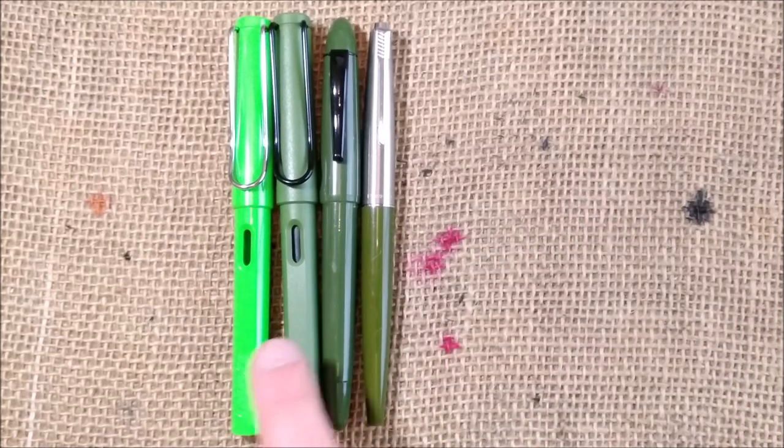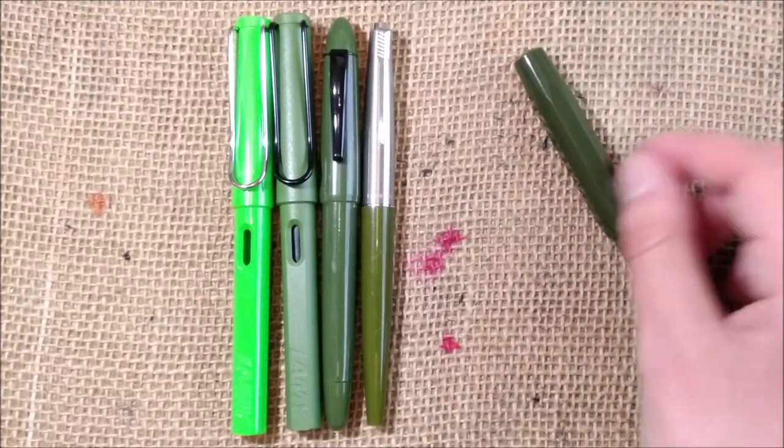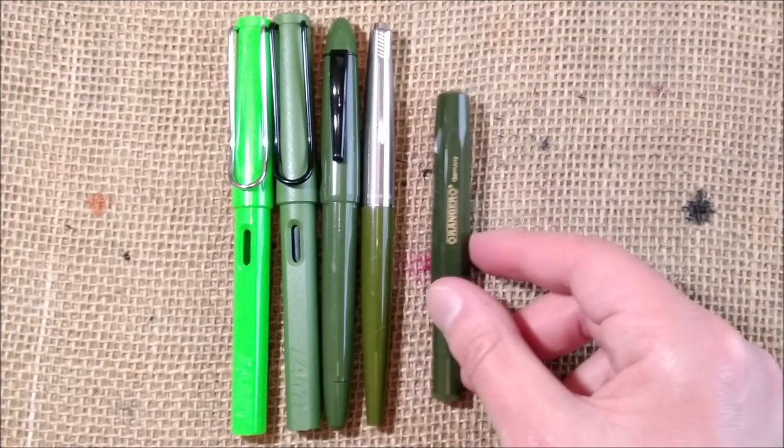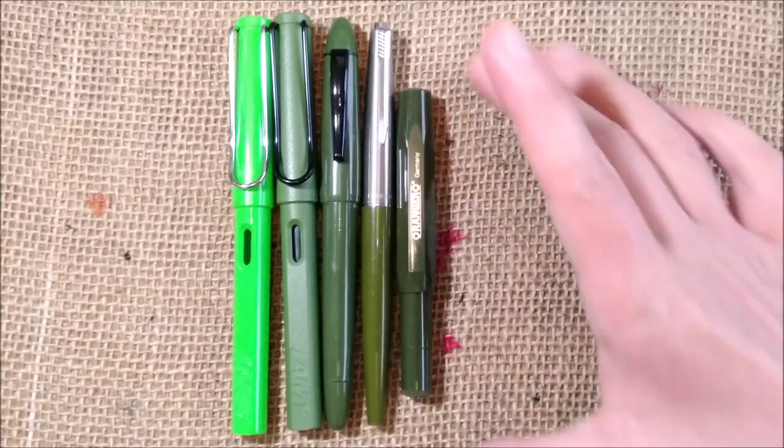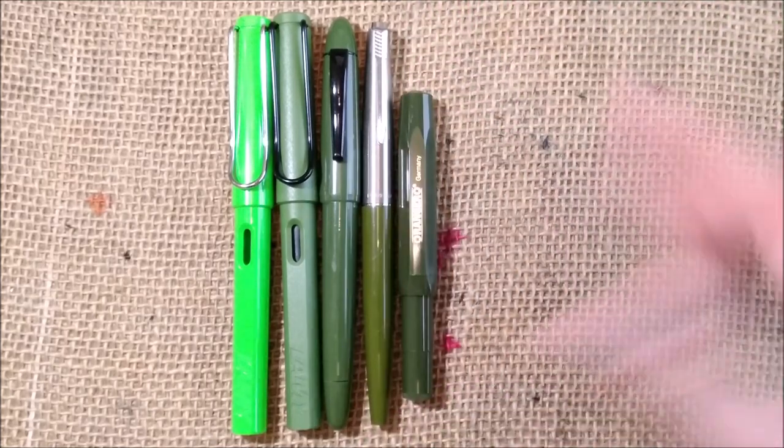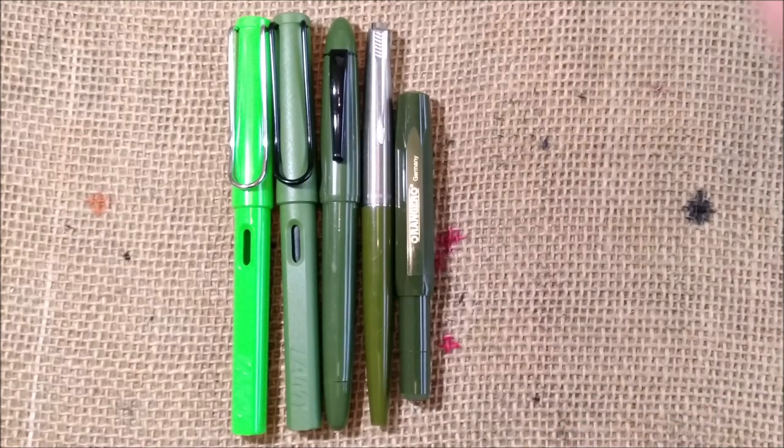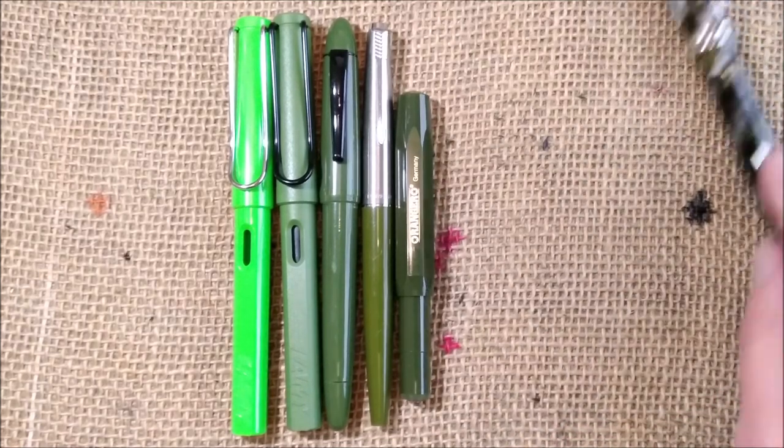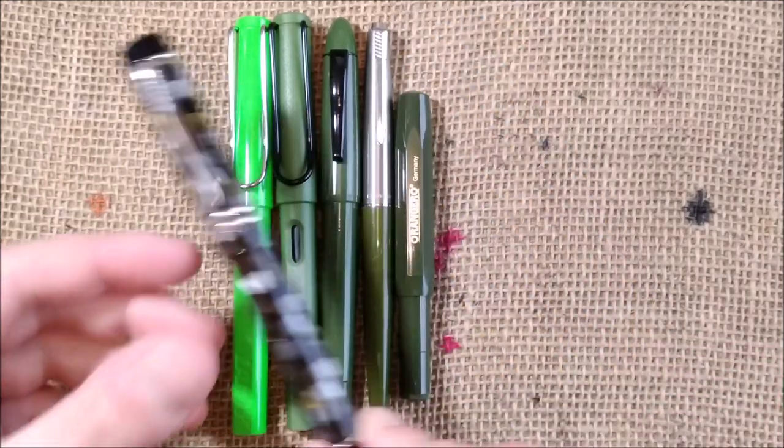Then we have the very hard to find, I would say rare, Kaweco Ranger Sport, which was an older edition, which is also this kind of color. It's more similar to the Stipula Five Dublin.